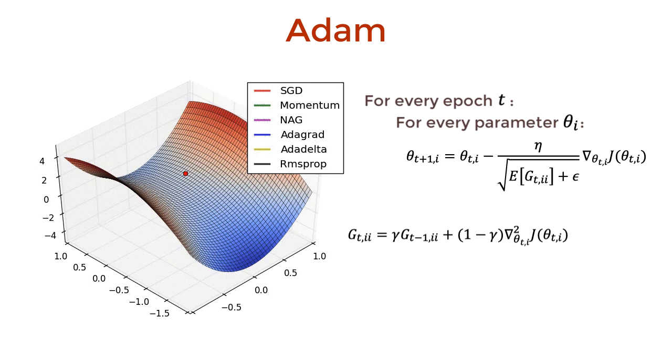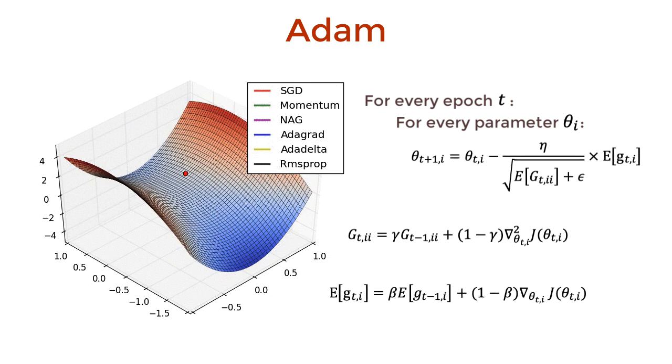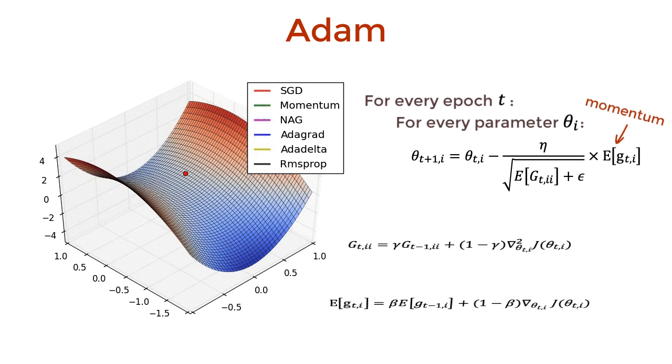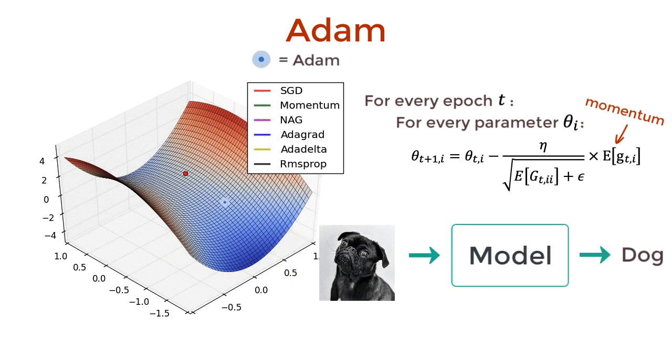The only change you need to make from Adadelta to Adam is just add the expected value of past gradients. What does it mean? It means that we are slow initially, but pick up speed over time. And this is intuitively similar to momentum, as you build up momentum over time. In this way, Adam can take different size steps for different parameters. And with momentum for every parameter, it can also lead to faster convergence.